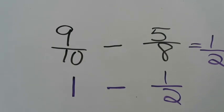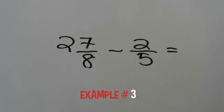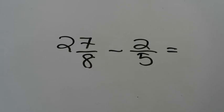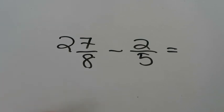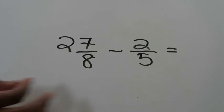The next example is going to use the same strategies, but this time we're going to talk about what you do when you're dealing with a mixed number. We're going to be looking at two and seven eighths and we're going to subtract two fifths from that, but we're still going to come up with an estimated answer. Two and seven eighths is a mixed number because it has a whole number part and a fractional part. When you're rounding a mixed number, you're going to ignore the whole number part for the time being and just pay attention to the fractional part.